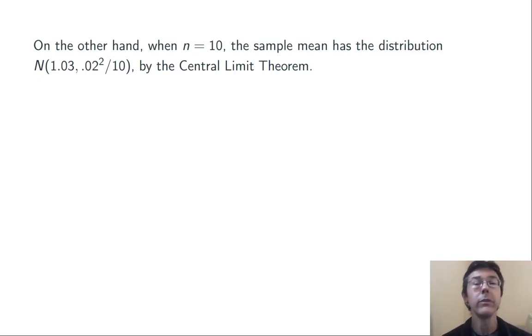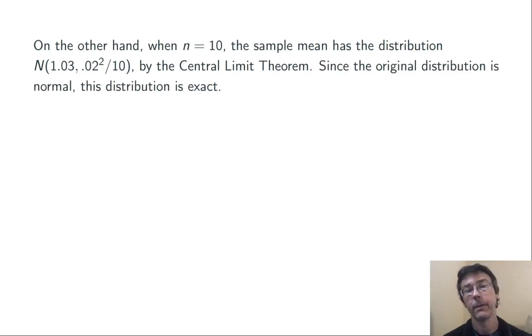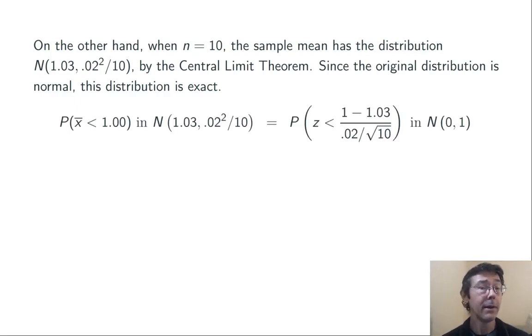On the other hand, when n equals 10, the sample mean has distribution still with mean 1.03, now with variance 0.02 squared divided by 10, and is normal by the central limit theorem. The original distribution that we're sampling from is exactly normal in this case, so this distribution for x-bar is not an approximate one anymore. It's exact.